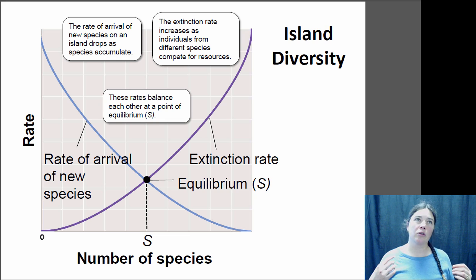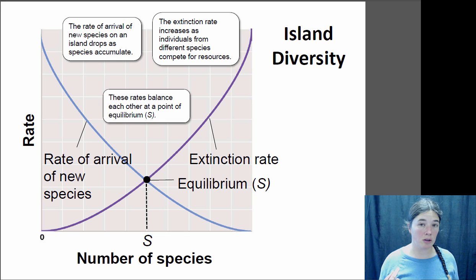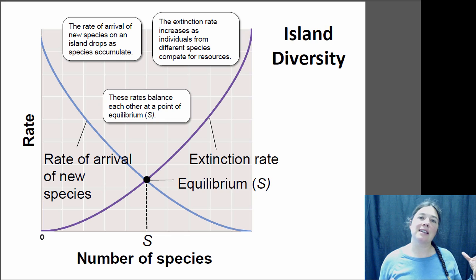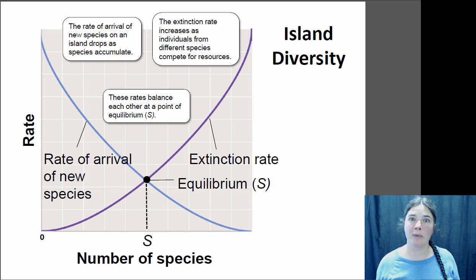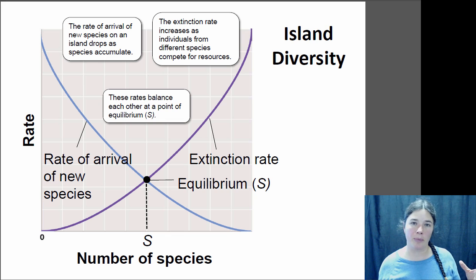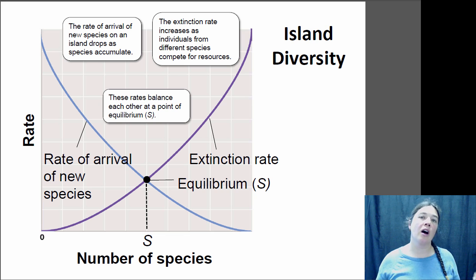The number of species expected on an island is determined by extinction rates and immigration rates. As the number of species increases, the immigration rate tends to decrease, because there's already a bunch of different things on the island. If a new individual of a particular species ends up there, chances are pretty good it's already present. So as you get more and more species, there are fewer new things to colonize the island, and the rate of immigration gets lower and lower.